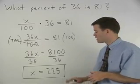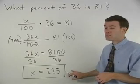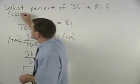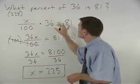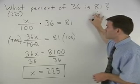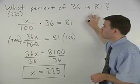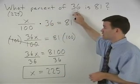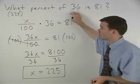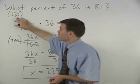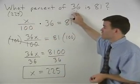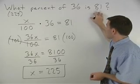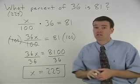Now let's check to see if our answer makes sense. We have 225% of 36 is 81. Well, we know that 100% of 36 would be 36, so 225% of 36 should be a lot more than 36. So 81 seems to make sense.